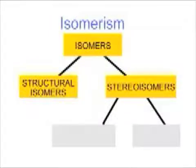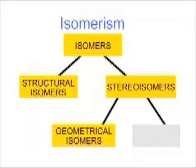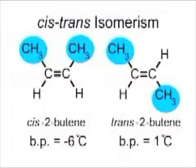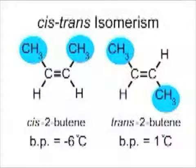Isomers that have the same groups of atoms bonded to one another, but differ in the spatial arrangements of the atoms, are called stereoisomers. In geometrical isomers, the groups are arranged differently with respect to one another. A simple example is cis-trans isomerism about a double bond in alkenes. Because rotation does not occur readily about the carbon-carbon double bond, cis- and trans-2-butene are distinct compounds with differing physical properties such as boiling point.